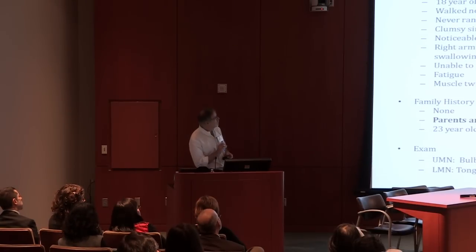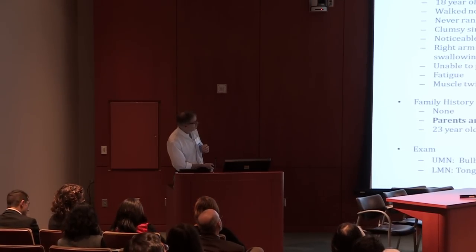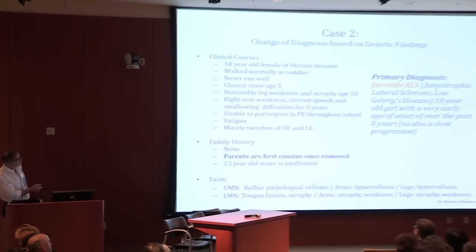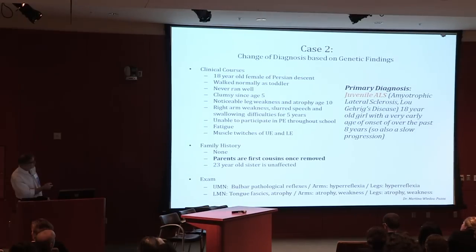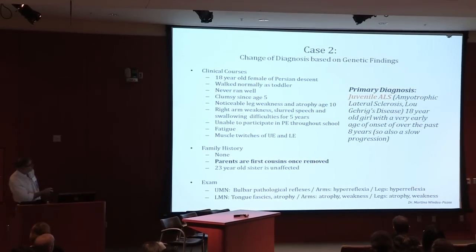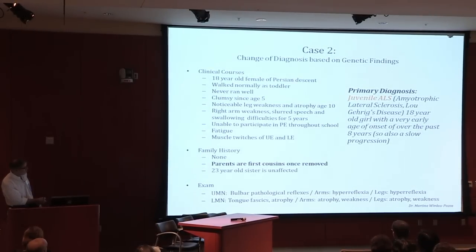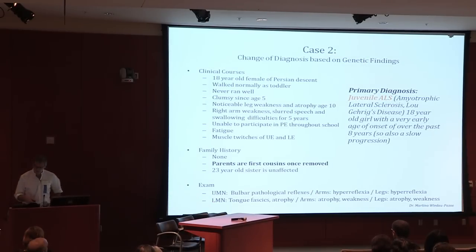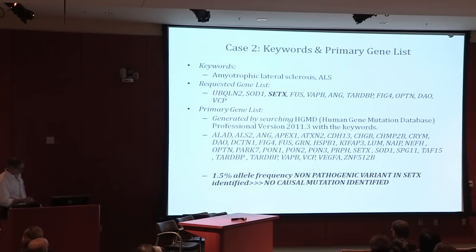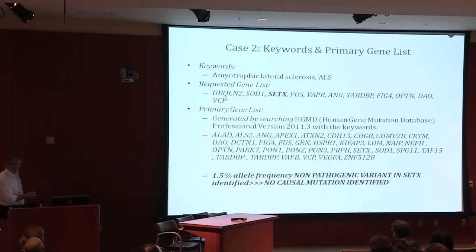A second case was brought to us by neurologist Martina Waital-Pezos, who works in the neuromuscular program. She brought an 18-year-old female of Persian descent whose parents were known to be first cousins once removed. This child had a diagnosis of juvenile ALS on the basis of upper and lower motor neuron signs — very slowly progressive. We plucked out the set of known disease genes that could lead possibly to some component of ALS or a juvenile form. We actually found a variant in SCTX with a 1.5% allele frequency, which could be very easily discarded as not being an important mutation for this disease process.